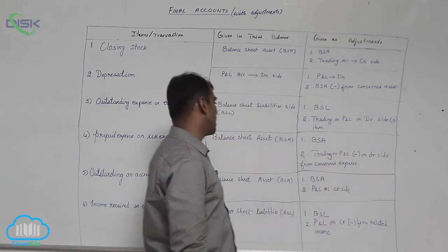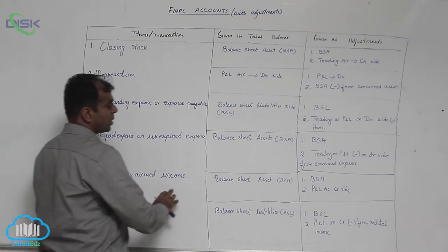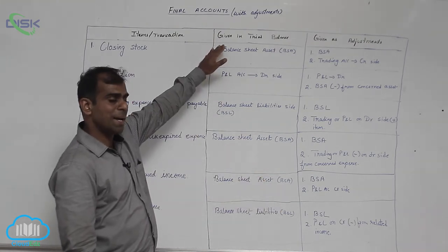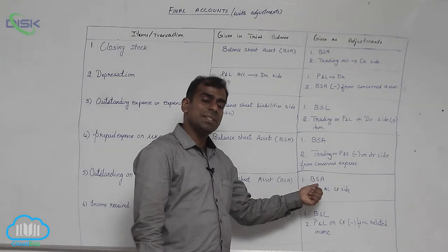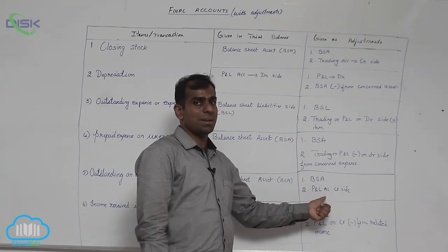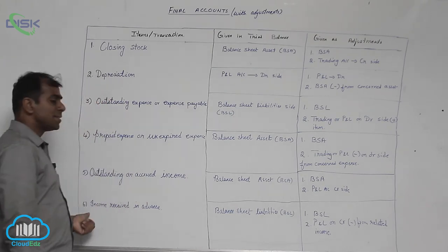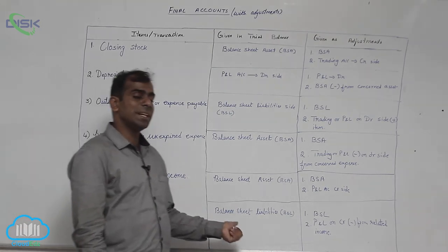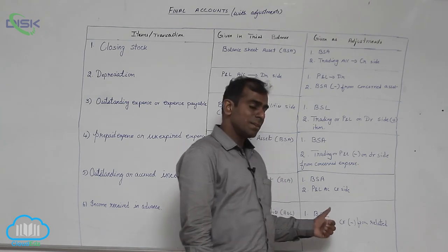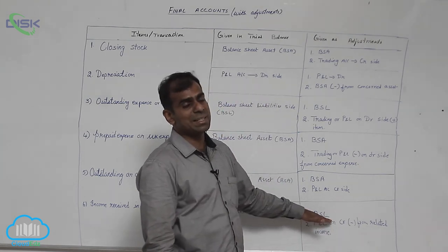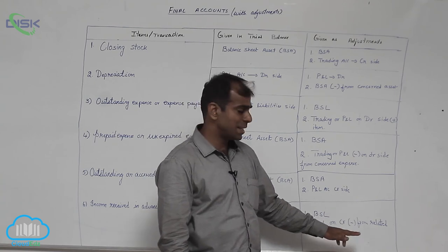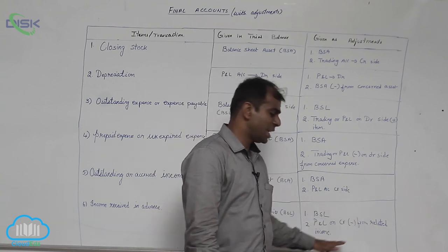For outstanding or accrued income: if given in trial balance, record it on the balance sheet asset side. If given as adjustment, record it on the balance sheet asset side and also on the credit side of the P&L account. For income received in advance: if given in trial balance, it appears on the balance sheet liability side. If given as adjustment, record it on the balance sheet liability side and deduct it from the related income on the P&L account credit side.